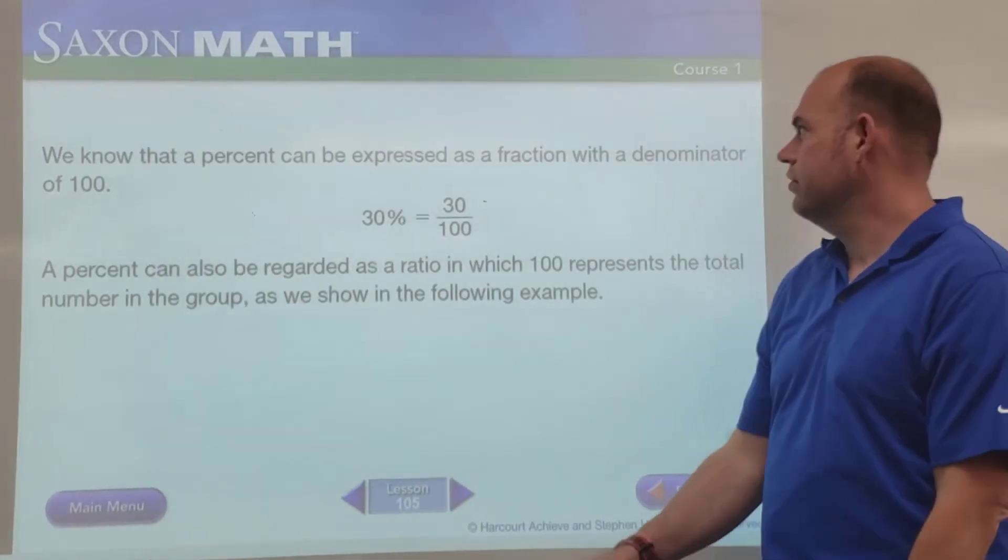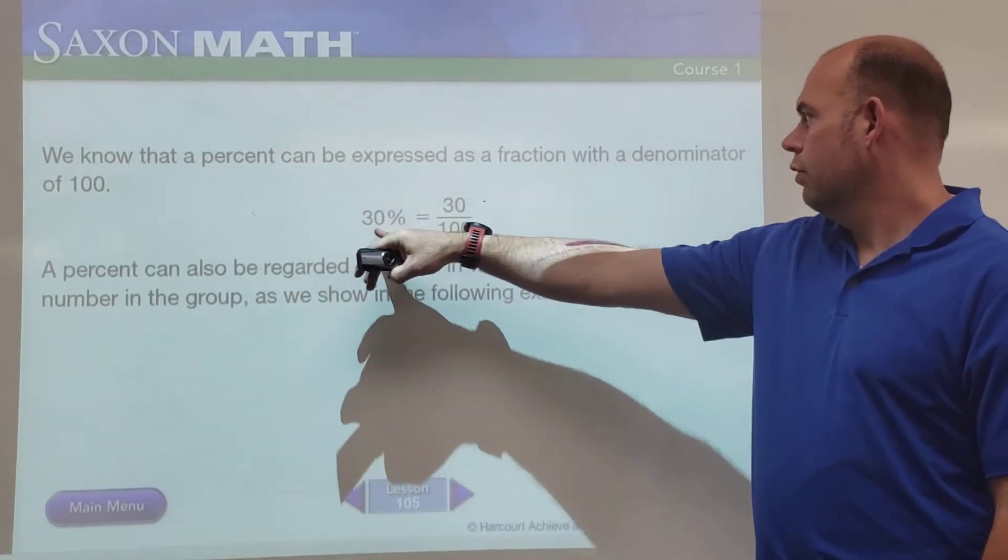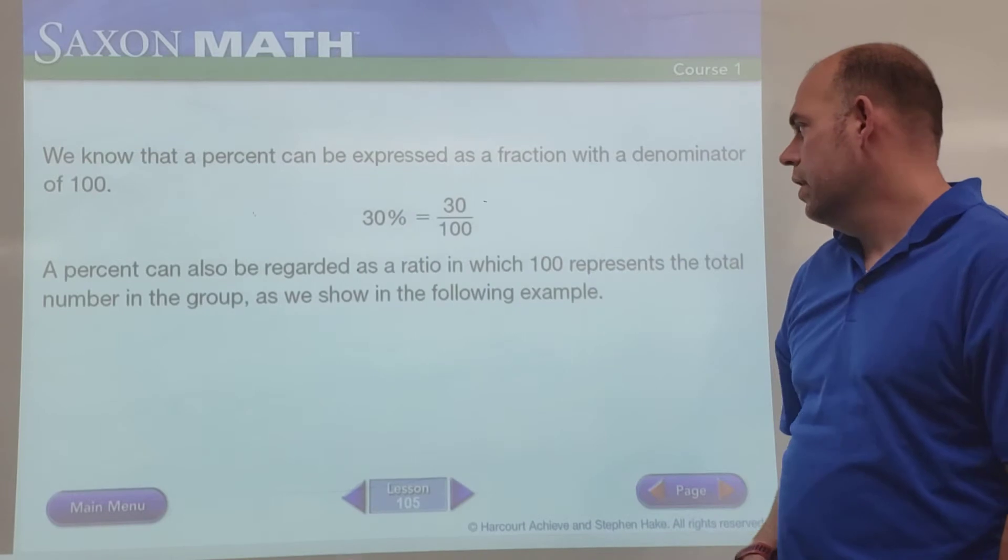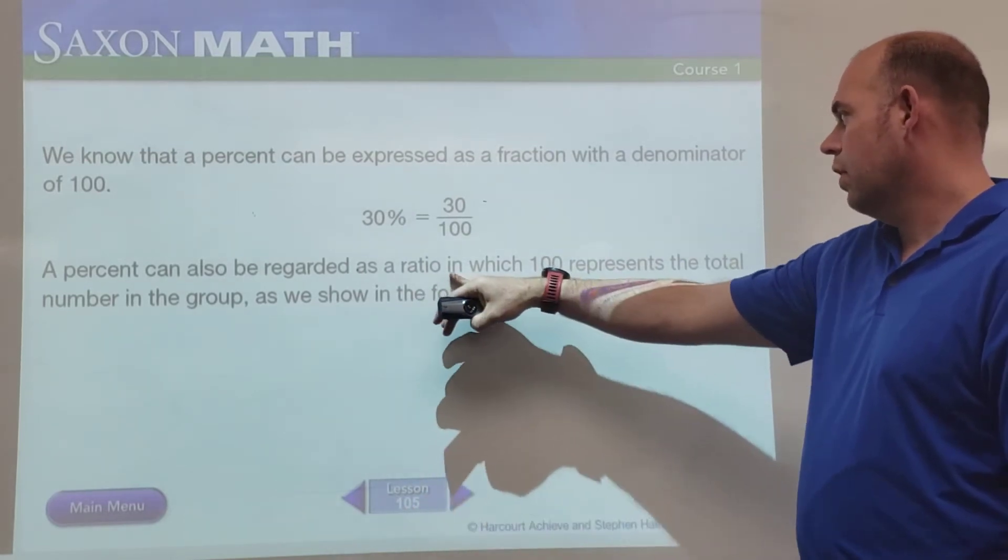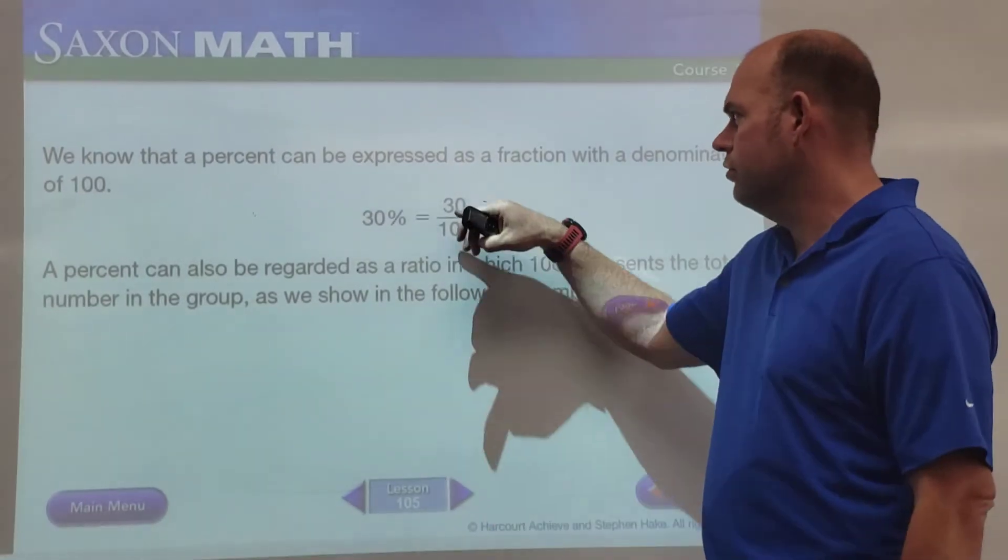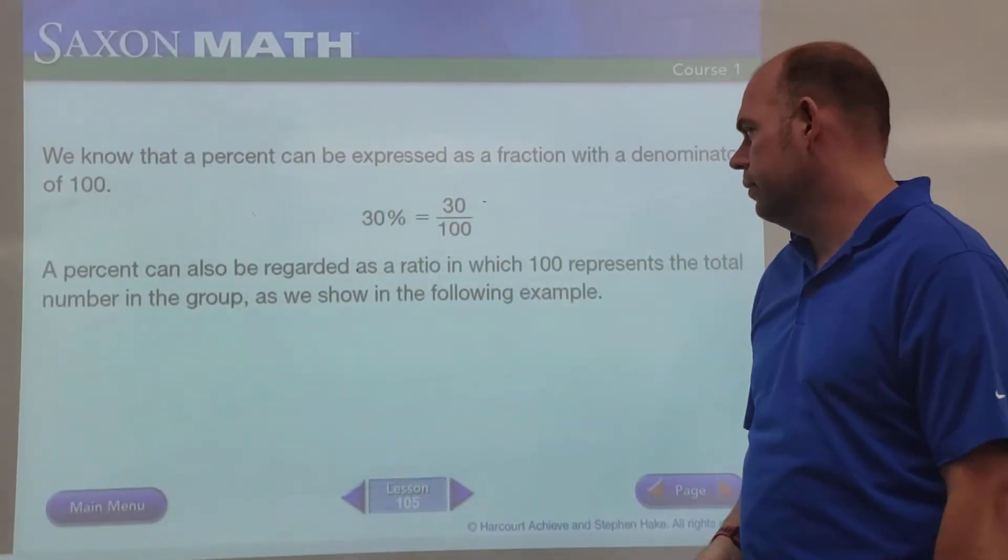Now we know what percent can be expressed in as a fraction. So for example, 30%, that's just going to be 30 over 100, and it's regarded as a ratio in which 100 is the total number of the group. So if we think of this as a ratio, it's 30 out of 100.